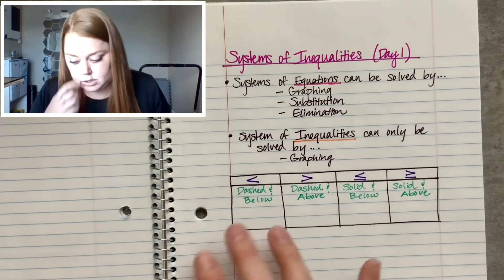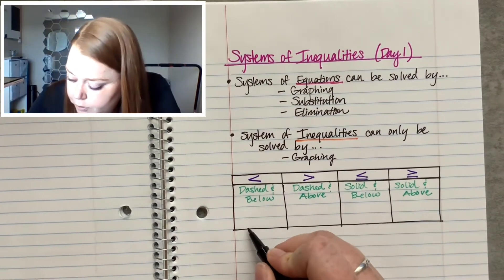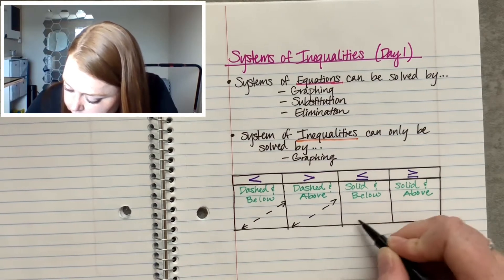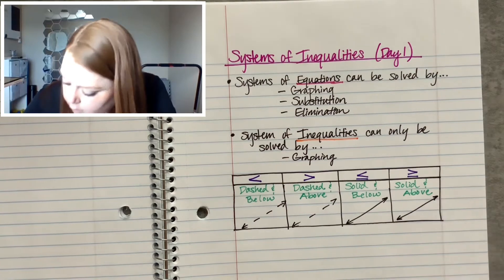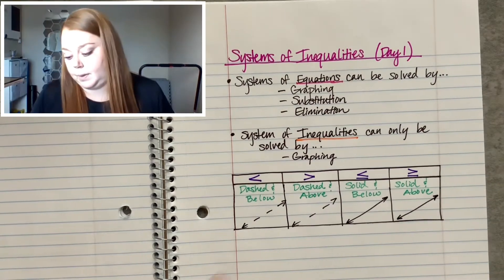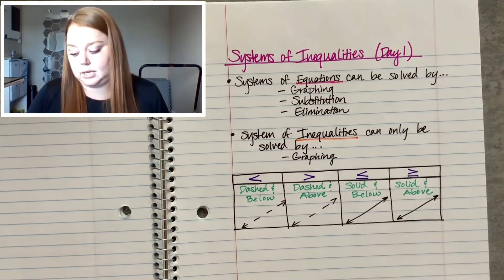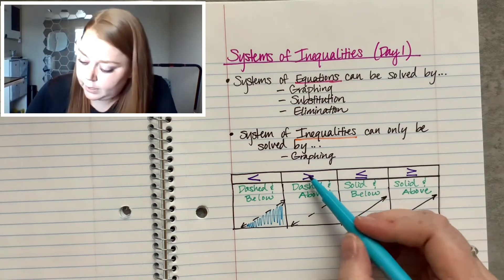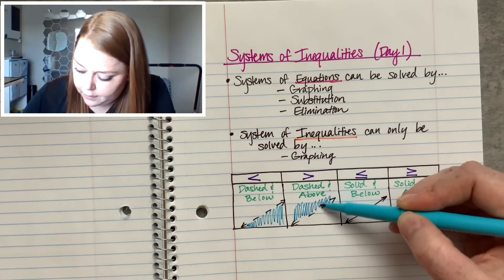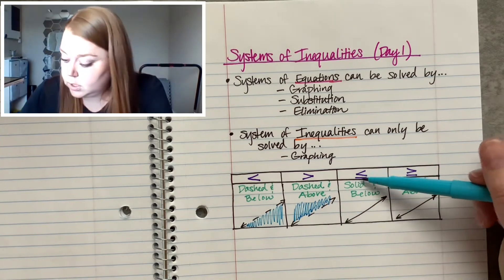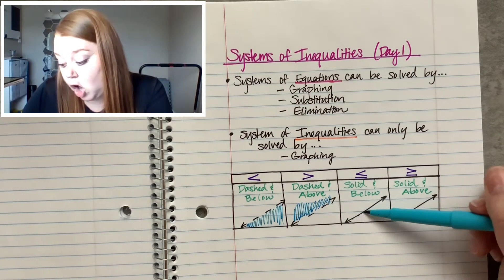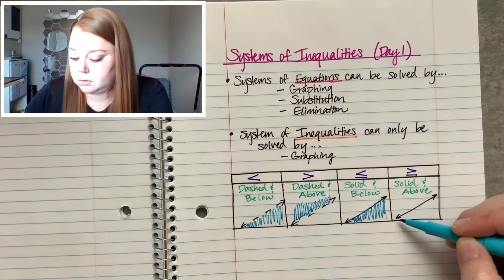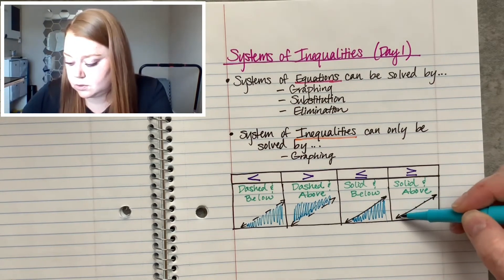Let's give ourselves a visual. For strictly less than: dashed line, shaded below — you shade everything below that line. For greater than: dashed line, shaded above — anything higher than that line is a possible solution. For less than or equal to: solid line, meaning anything on that line is a possible solution, as well as anything below it. For greater than or equal to: anything on the line is a possible solution, as well as anything above it.